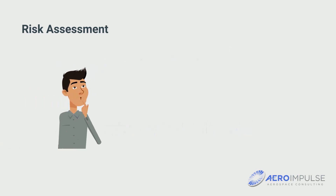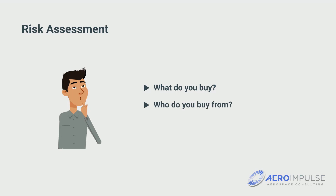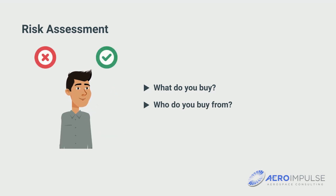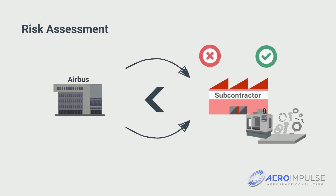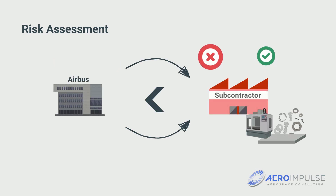To answer this, it is important to ask first and foremost: What do you buy? And who do you buy from? Then you will be able to determine your risk position and realize that the risk can be very different. If you work as a subcontractor for Airbus in metal construction who even provide you with the parts, the risk is lower than if you procure and assemble electronic components on your own.